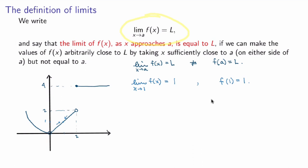Now let's look at the limit as x goes to 0 of the same function. There's a hole in the function at x = 0, but if I look at the behavior as x approaches 0 from either side, the function approaches the value 0. So the limit as x → 0 equals 0, even though the function evaluated at 0 is actually undefined. This illustrates that the two statements are not the same in general.